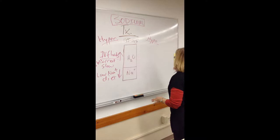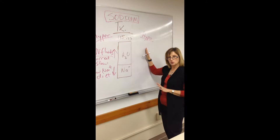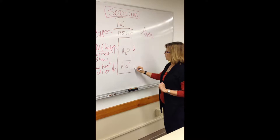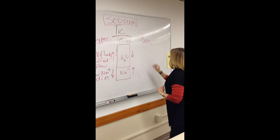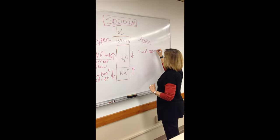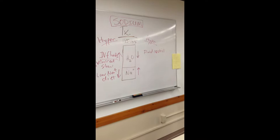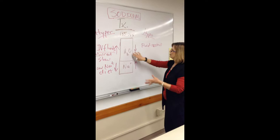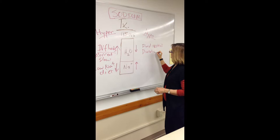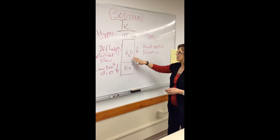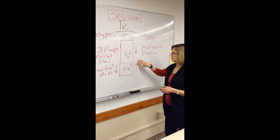To treat hyponatremia — too low sodium — we either need to decrease water or increase sodium. To decrease water, we put patients on fluid restrictions. We can also use diuretics, especially loop diuretics, to help the kidneys get rid of water and bring the water concentration down — as long as we confirm it truly is a water problem.